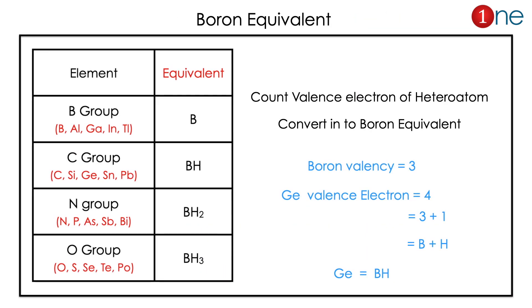Then we will see how we can find boron equivalent. For that you have to memorize the periodic table by group. Boron group means boron, aluminum, gallium, indium, and thallium. Any metal in the group will have same boron equivalent.